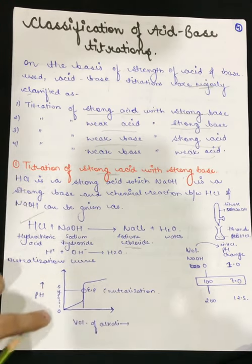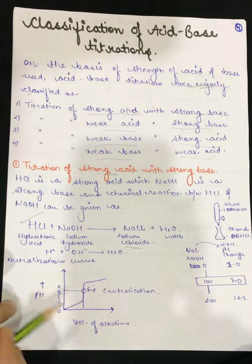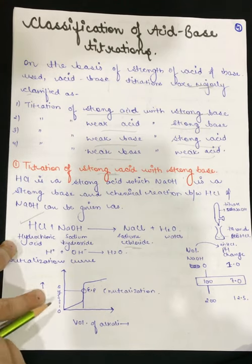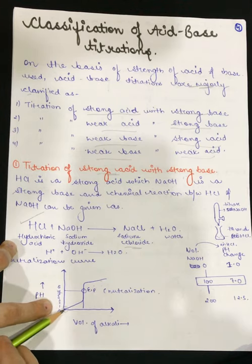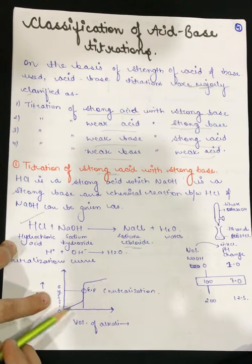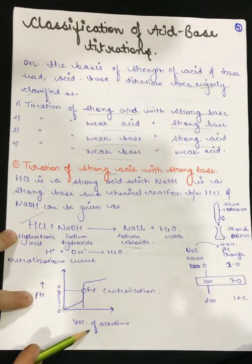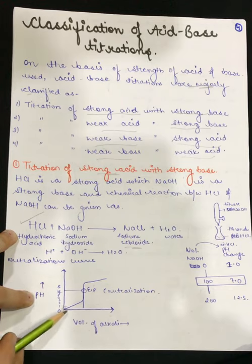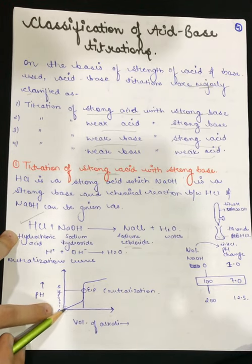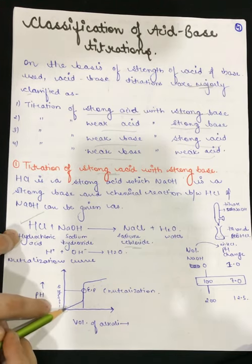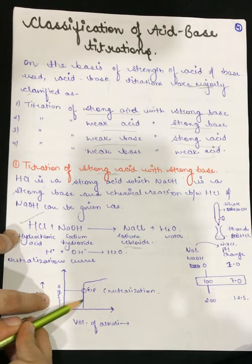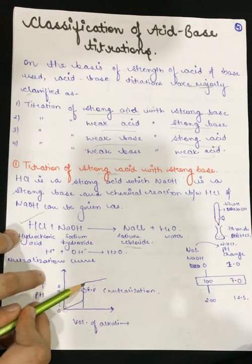In this case, we obtain a neutralization curve. Since our acid is strong, the curve starts from the origin because the pH will be low — more acidic. This is a curve between pH and the volume of alkali added. As the strong base concentration increases, the pH increases until we reach a neutralization point.